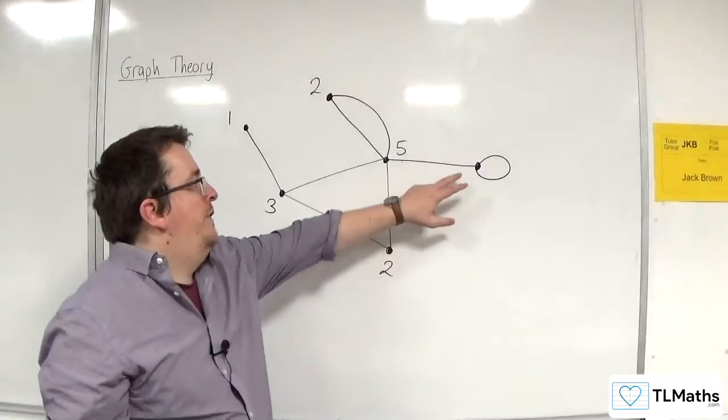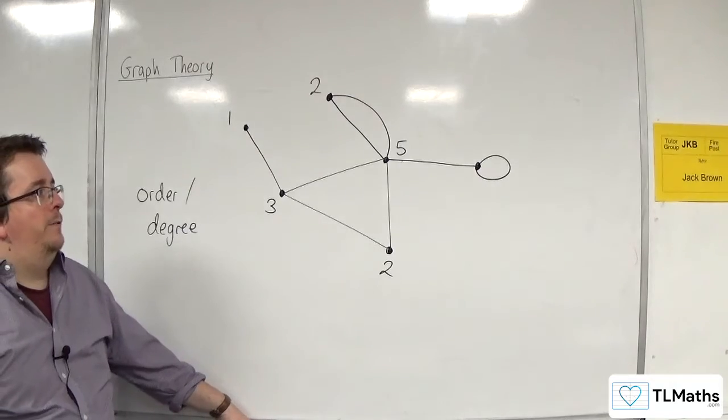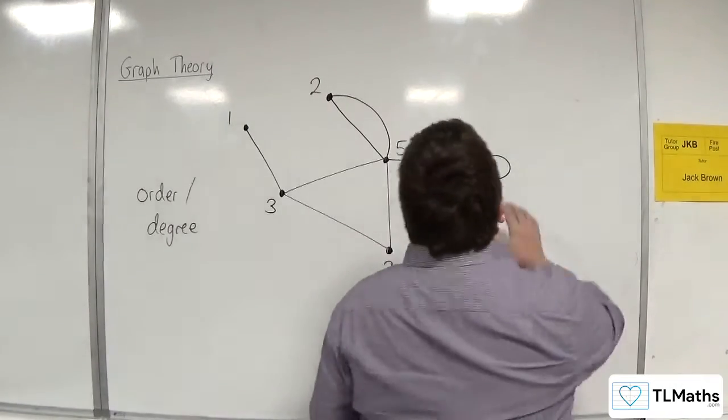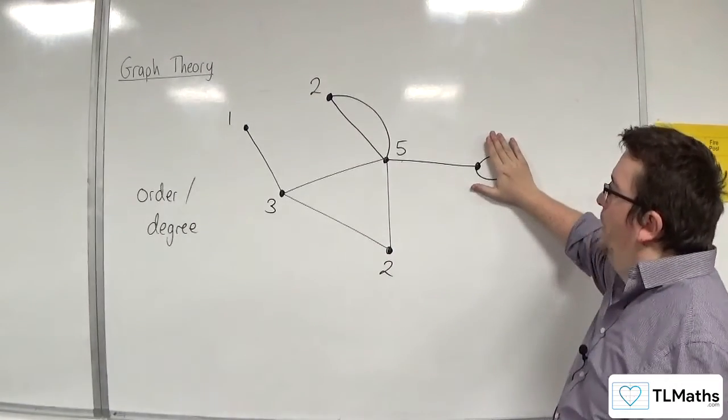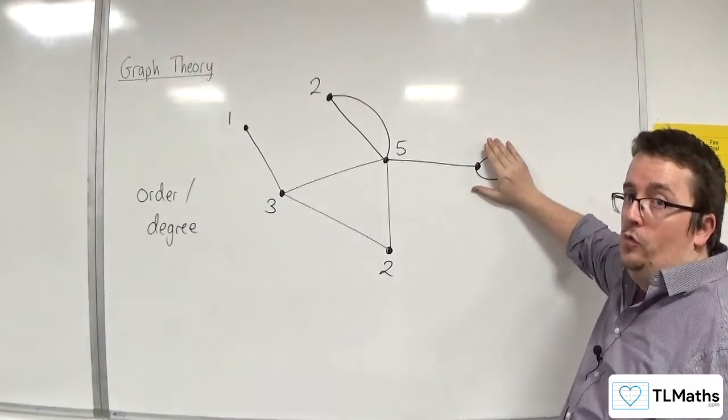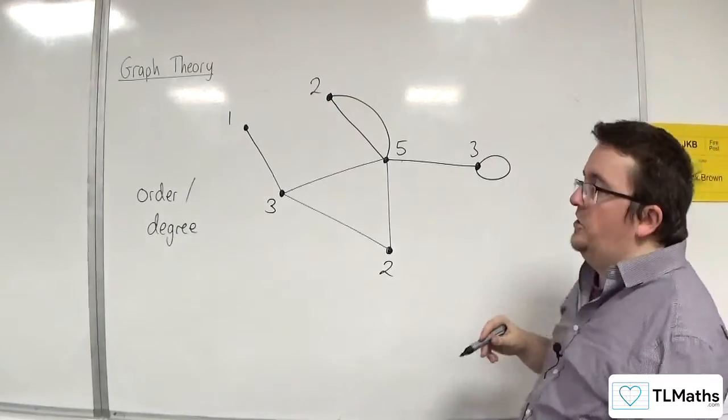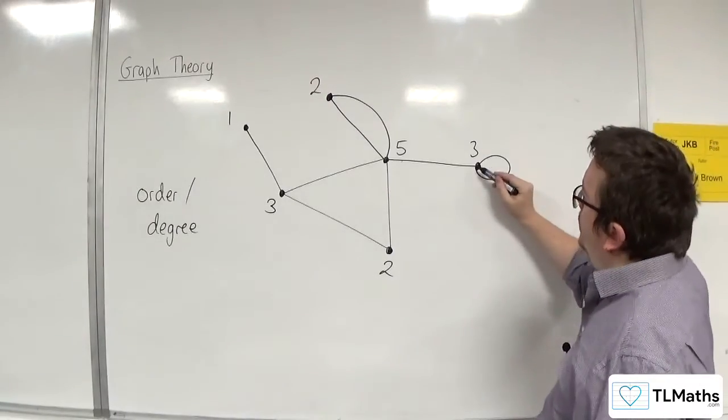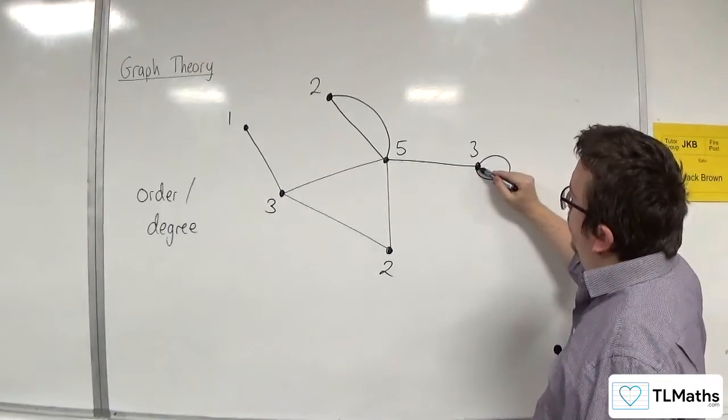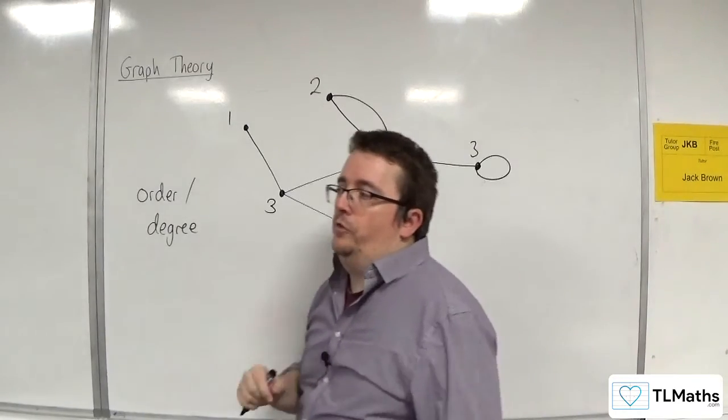Now, for this one, sometimes having a loop catches people out. Essentially you need to look at this as if I cover that part up and I said what's the order of that vertex, you would say 3. And so even with a loop there, it is still 3 because you can either take that root out, or that one, or that one. So we would say that has order 3.